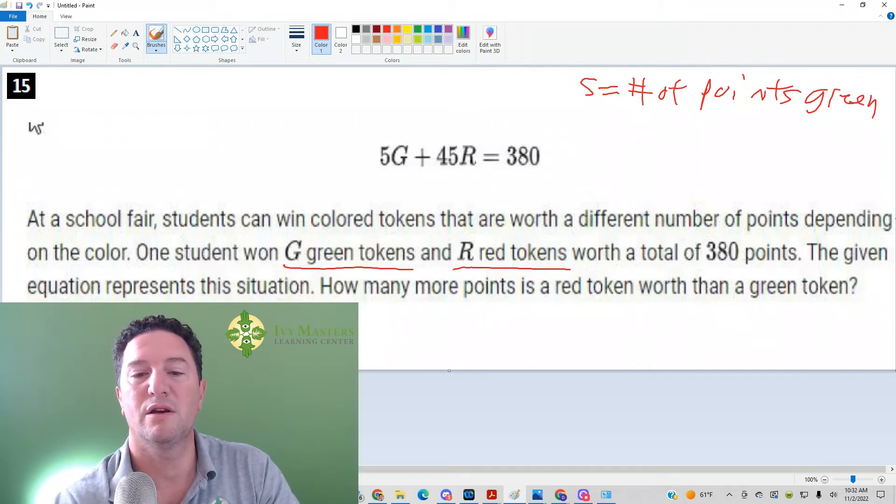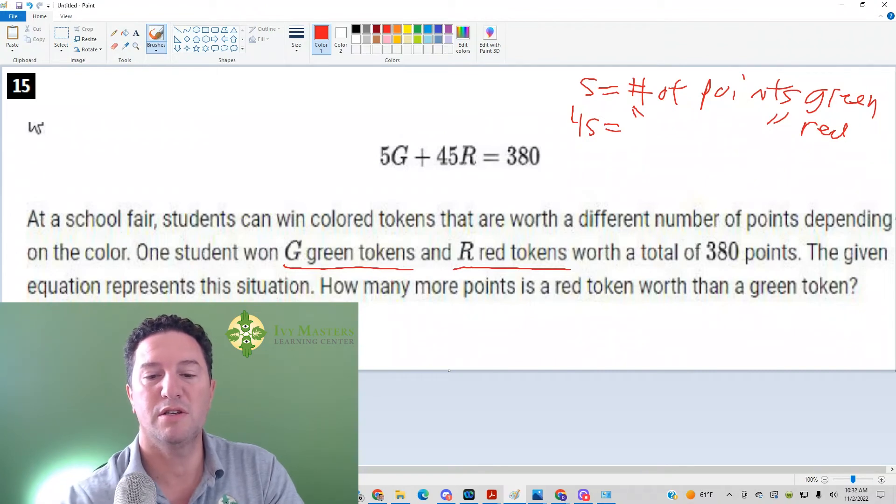So what's 45? 45 is the number of points for a red token. The question is how many more points is a red token worth than a green token? It's just 45 minus 5.